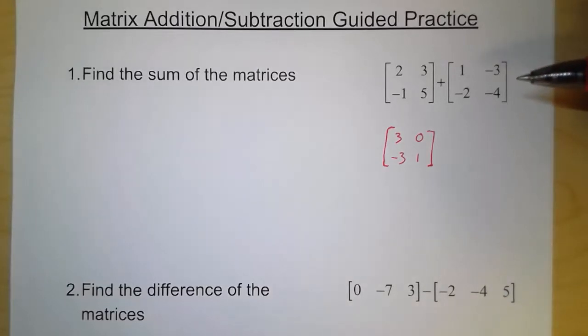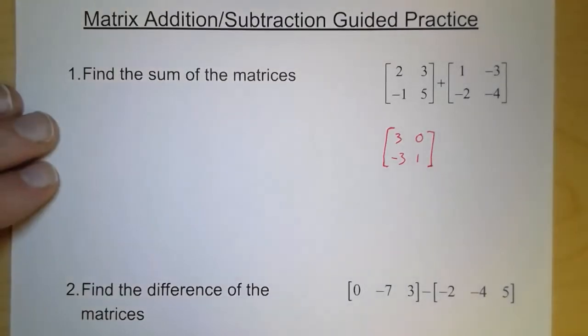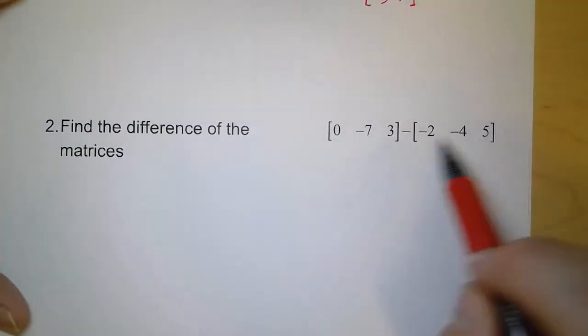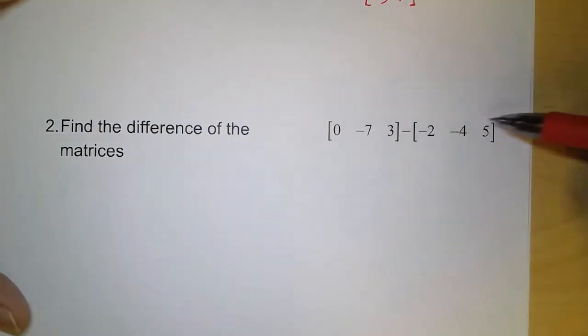So addition and subtraction really is just adding or subtracting the corresponding numbers within the matrix. So looking at number 2, here we're subtracting. Both of these have one row and three columns.